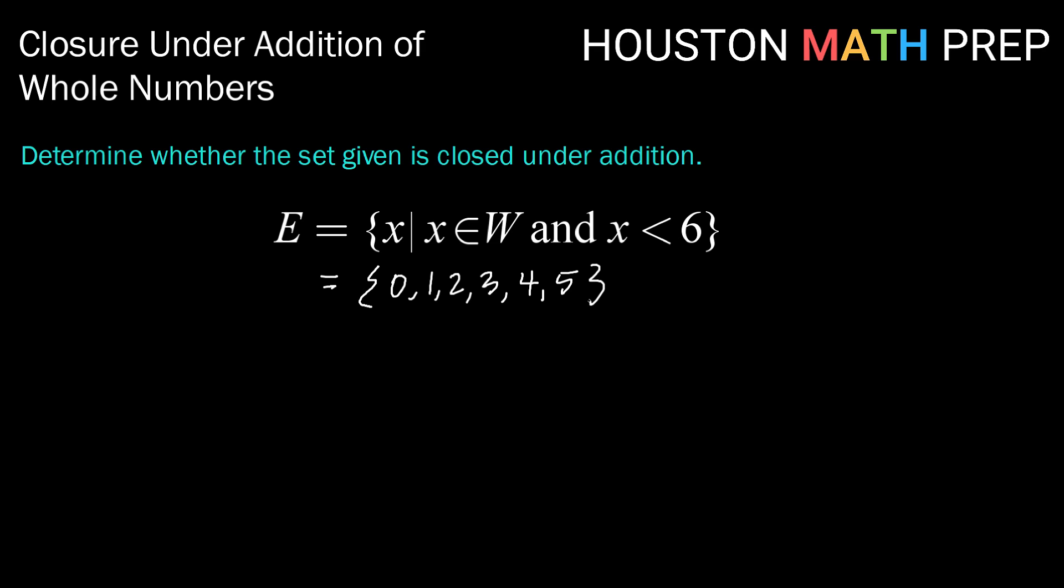So we want to know if that set is closed under addition. So take some possibilities, right? I'm going to start at the high end this time. I'm going to add 5 with itself, right? Don't forget when you're checking your possibilities, not only can you add each element with another element, but you can add each element with itself. So 5 plus 5 results in 10. 10 is not an element in this set, which means that this set is not closed on addition.